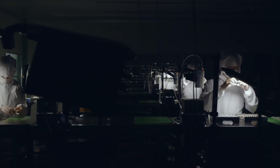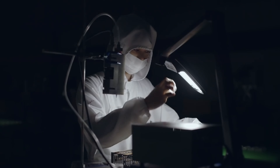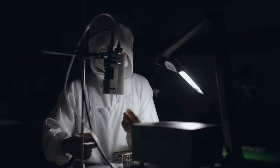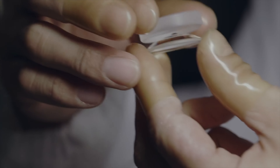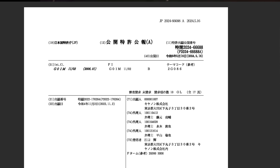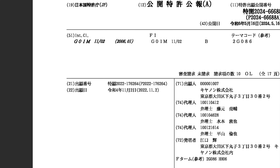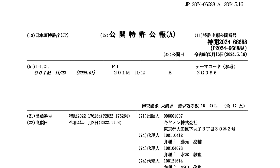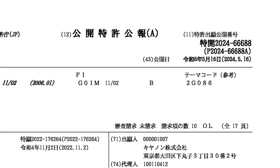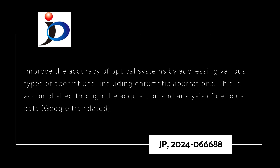Has Canon found a way to efficiently identify optical aberrations in the lens manufacturing process with high precision? In Canon patent filing JP 2024-066668, filed on November 2, 2022, and published May 16, 2024, Canon claims to have found a way to improve the efficiency of optical systems or optical lenses by addressing various types of aberrations, including chromatic aberrations. This is accomplished through the acquisition and analysis of defocused data.